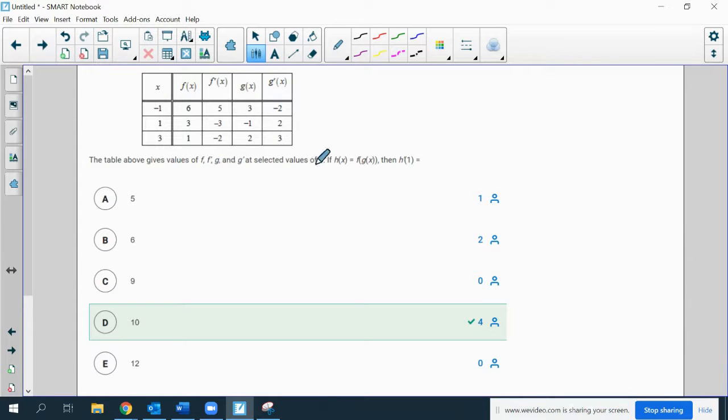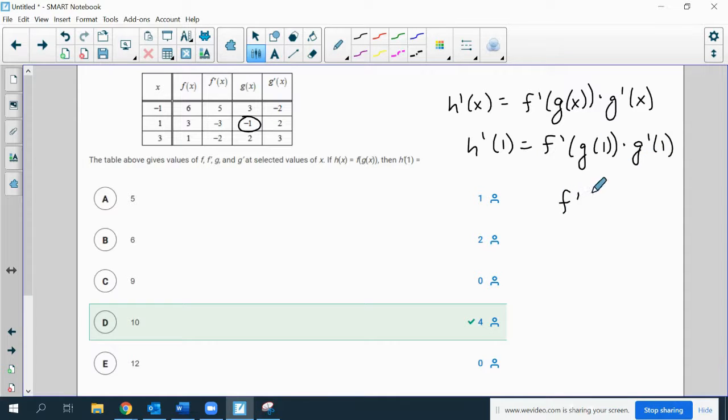The table of values above gives f, f prime, g, and g prime, and we know that h is equal to f of g of x. So what is h prime of 1? h prime of x is equal to f prime of g of x times g prime of x. That is the chain rule. And so if we want h prime of 1, that's f prime of g of 1 times g prime of 1. g of 1 is negative 1, so I need f prime of negative 1 times g prime of positive 1. I just replace g of 1 with negative 1. f prime of negative 1 is 5, g prime of 1 is 2. 5 times 2 is 10.